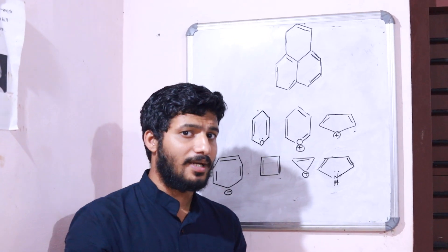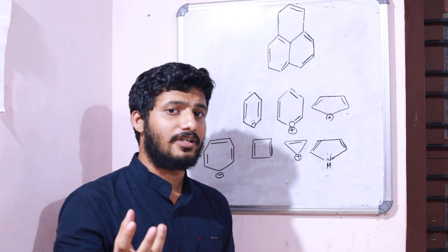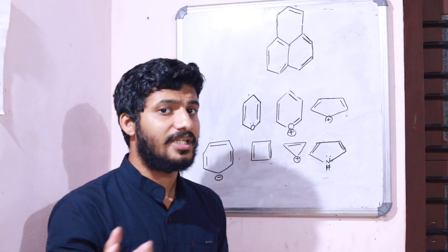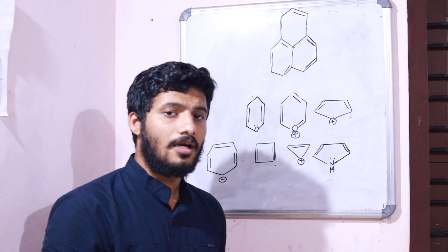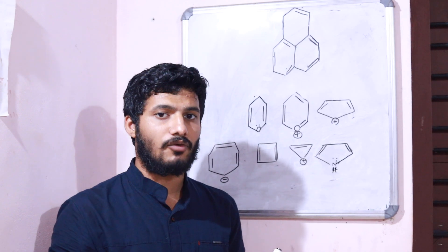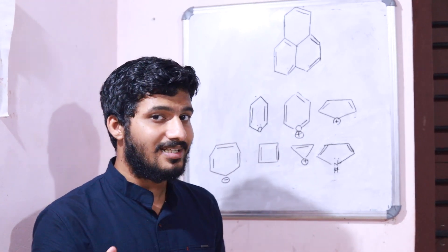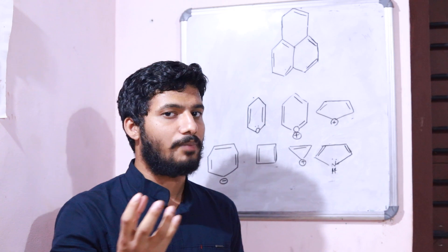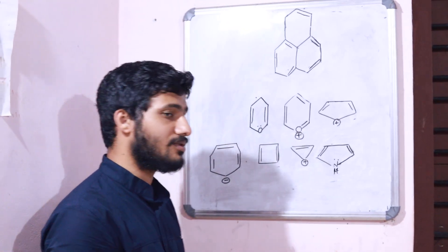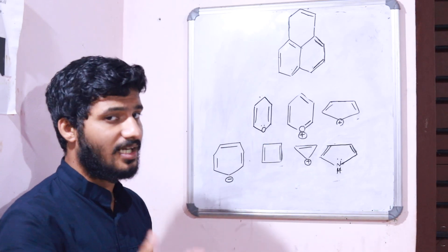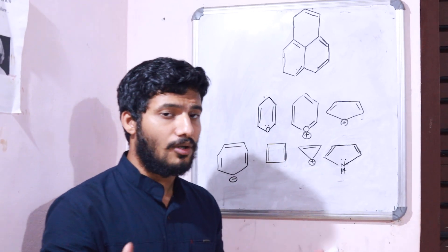What do you mean by aromatic character? This concept is very important. Aromatic character means when a compound is showing a sustained induced ring current, and also the delocalization of 4n+2 pi electrons over a planar monocyclic ring. The concept of monocyclic, planar, and 4n+2 pi electrons — and also diatropic — are all very important in learning aromaticity.